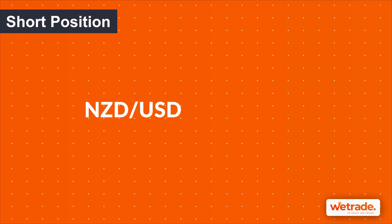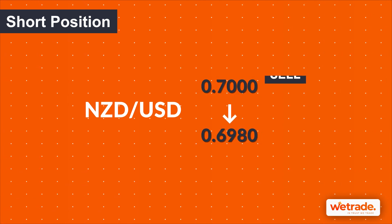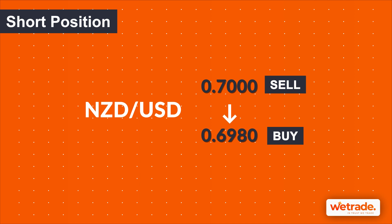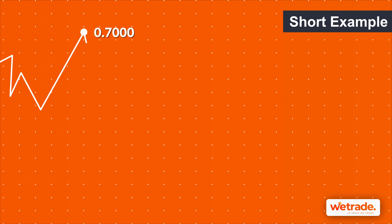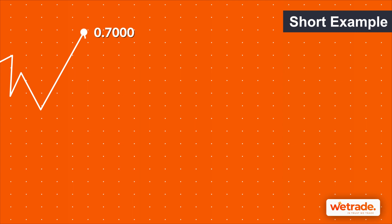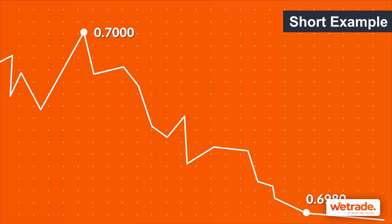In the case of a short position, traders are hoping that a currency will decrease in the future, so they sell it at a higher price and buy it back at a lower price. This option is known as going short. For example, if the New Zealand dollar against the US dollar is worth 0.7000 and the trader's analysis shows it might depreciate to 0.6980, the trader would go short, and once the price depreciates to 0.6980, they buy back and make money from the price movement.